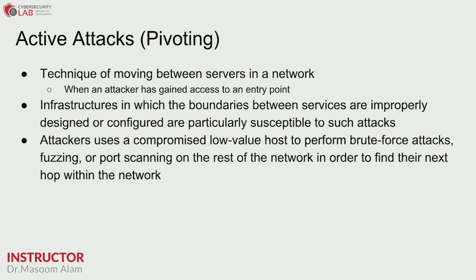Another important active attack is pivoting. Attackers try to get the low-hanging fruit in the network and then pivot around it. The technique of pivoting involves moving between servers in the network — when attackers gain access to one system, they move laterally through the network via pivoting. Infrastructures with improperly designed or configured boundaries are particularly susceptible to such attacks.